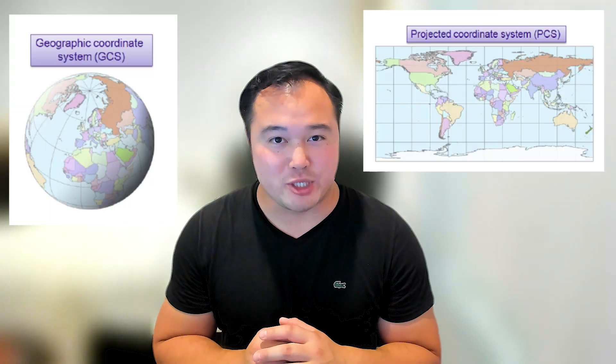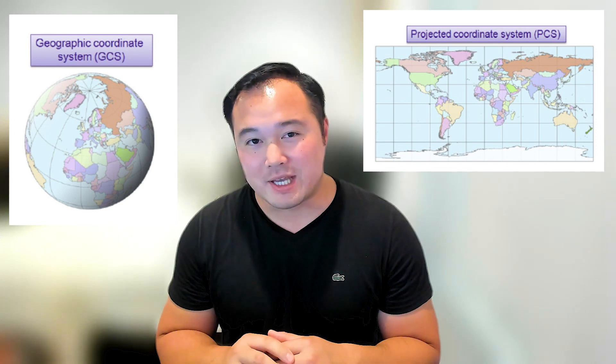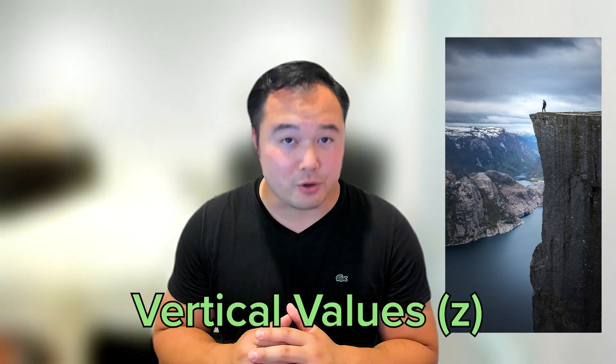Both the geographic and projected coordinate systems — I'm just going to say GCS and PCS from now on — use horizontal X and Y values to locate where exactly in the world you are. For GCS, these horizontal measurements are your latitude and longitude, expressed as degrees. For PCS, these horizontal values are linear measurements converted from GCS angular measurements and expressed as Cartesian coordinates in feet or meters. If you're working with 3D data, you also have to consider the vertical values, which tell you the height and depth of where an object is in the world, typically in relation to sea level.